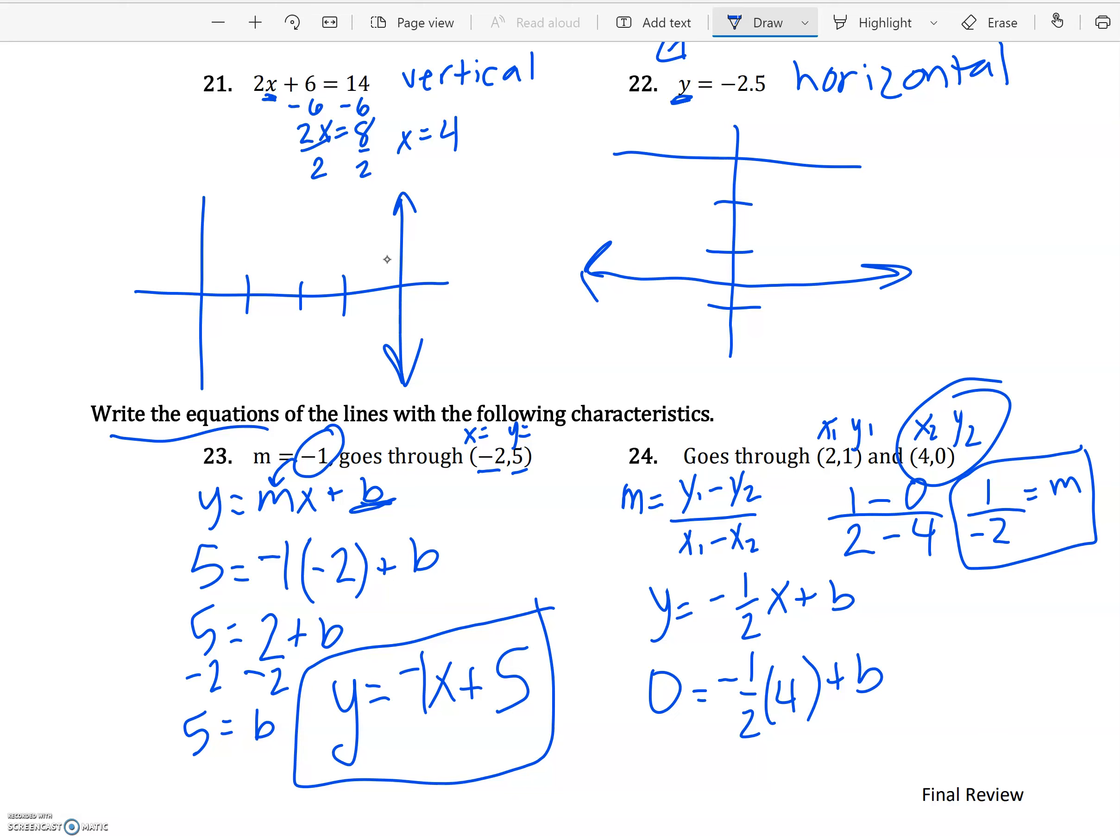So again, now I have my m and my b, and I can make my equation. So final answer, y equals -1/2 x plus b, which we found was 2. There's the equation of the line that goes through (2, 1) and (4, 0). This has been your review questions for Chapter 3 for the final exam review for Math 100B.